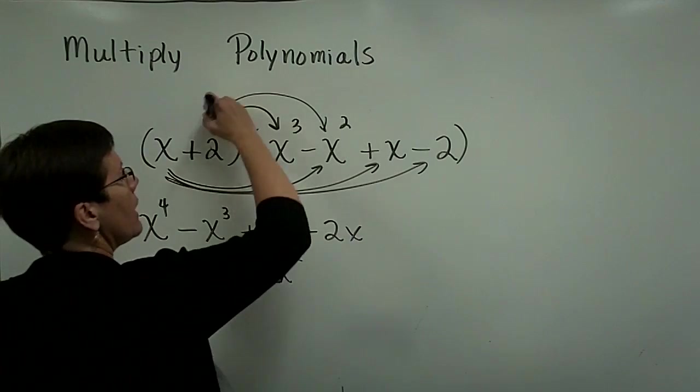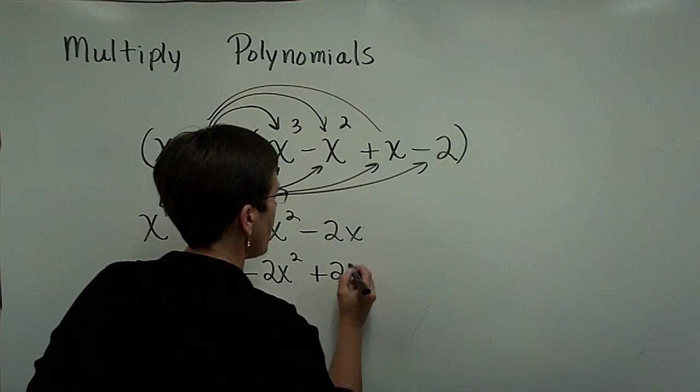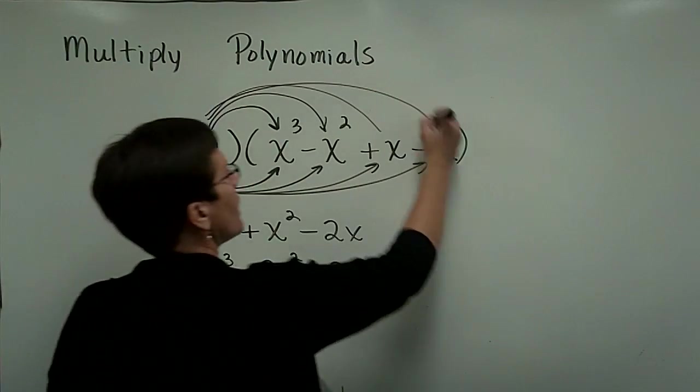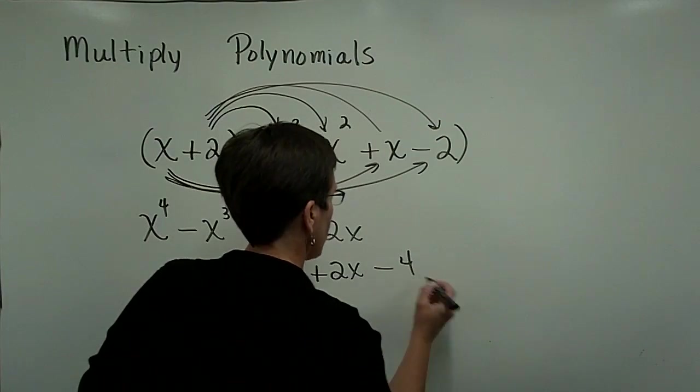and 2 times x is a positive 2x, and 2 times a minus 2 is a minus 4.